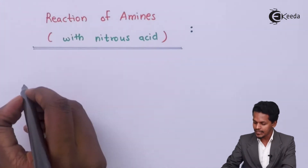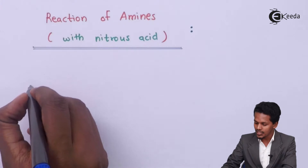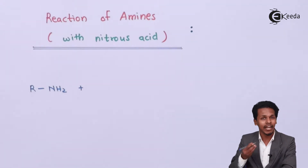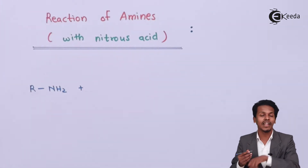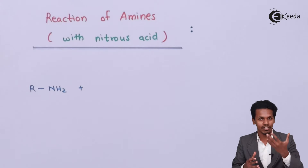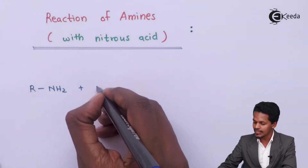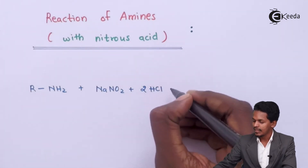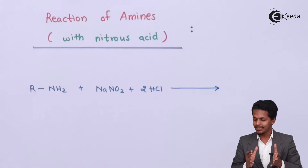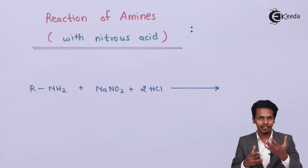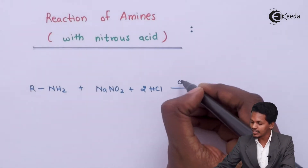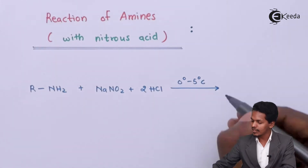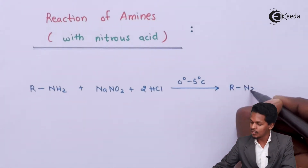For primary amines, consider R-NH2 reacting with nitrous acid. Nitrous acid is produced in situ from NaNO2 along with 2 moles of HCl. The temperature provided is 0 to 5 degrees Celsius. The product obtained is R-N2Cl, which is alkyl diazonium chloride.